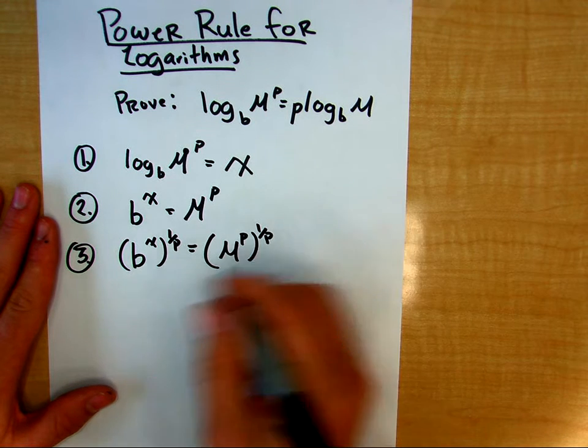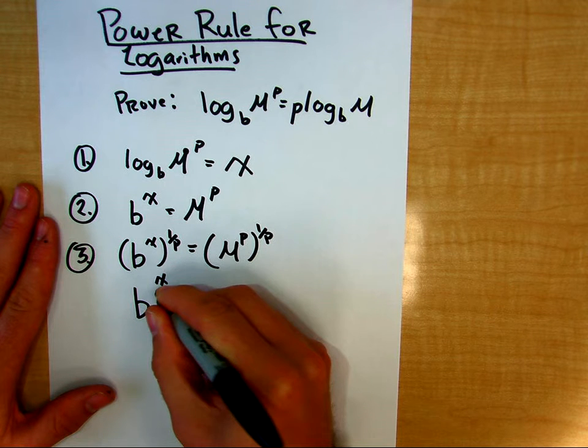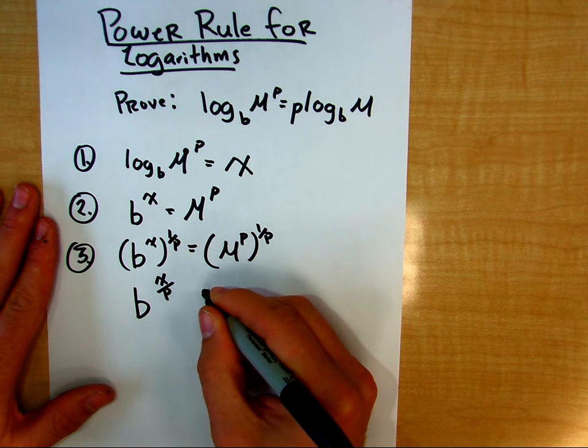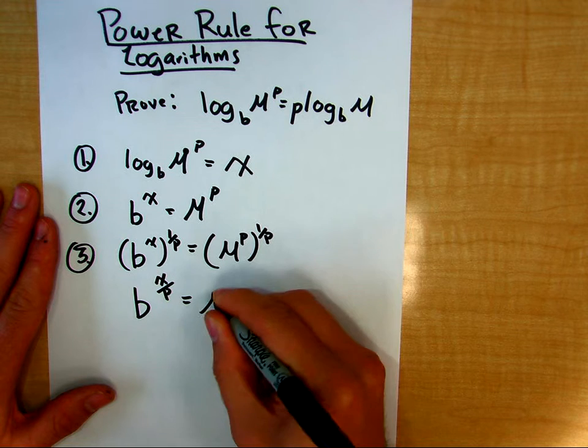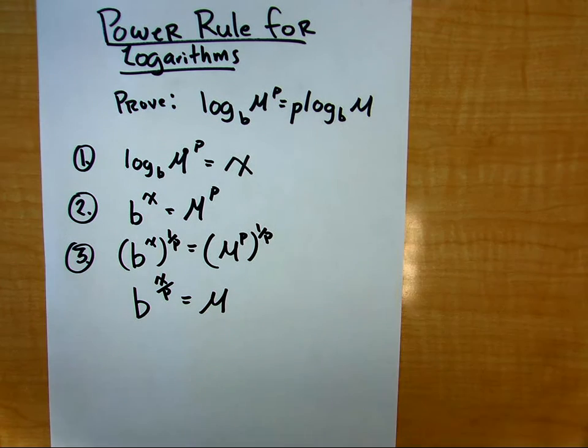So if I do this, I'm going to get b raised to the x over p power is equal to m, just m to the first power, or m, right?